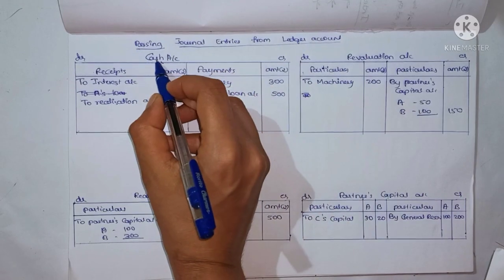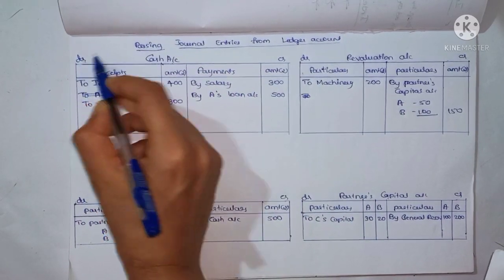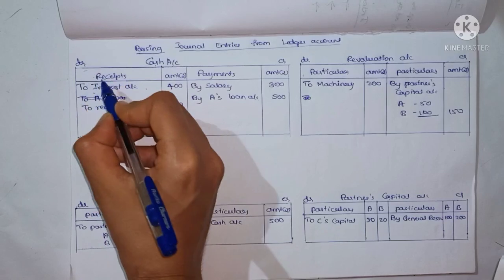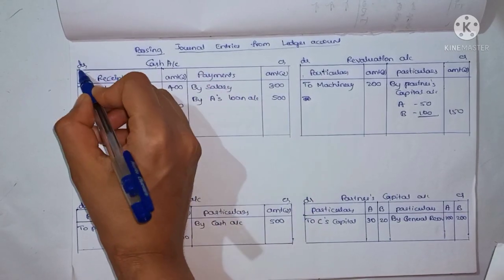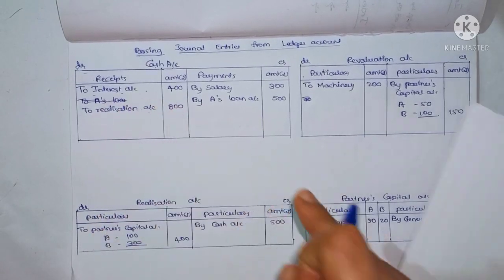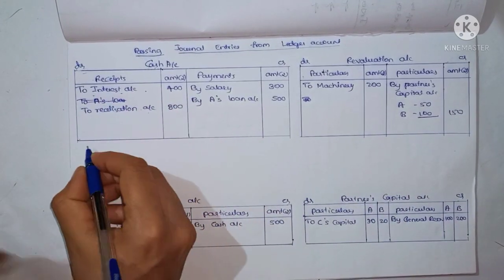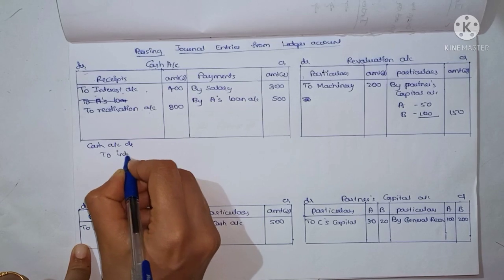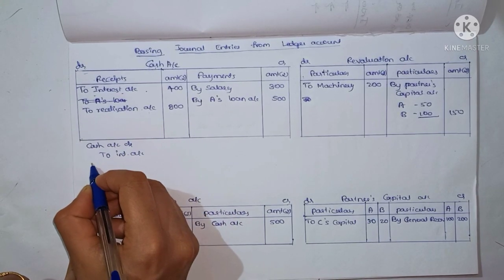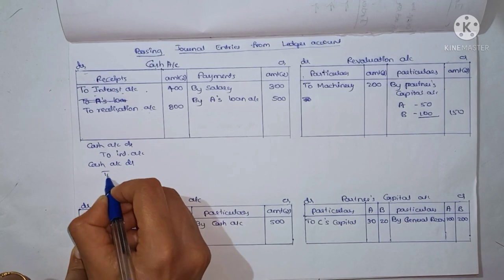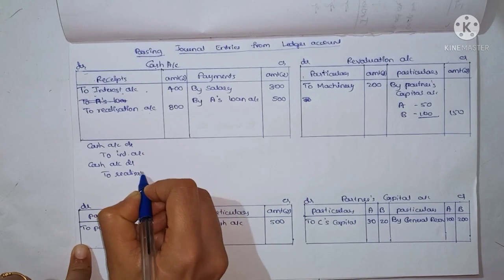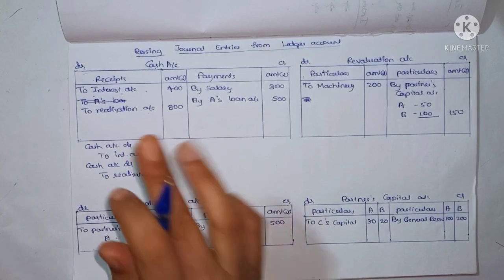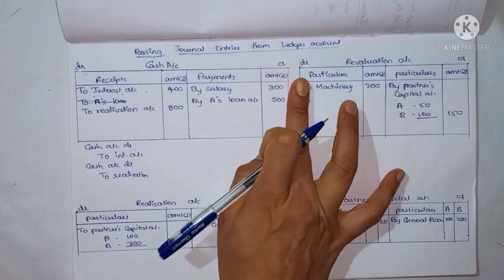I will choose the cash account. Cash account is debited to Interest Account — that is the first entry. The second entry is Cash Account debited to Realization Account. Cash Account Debit to Interest Account, amount $400. Cash Account Debit to Realization Account, amount $800. That is how you write the debit column entries.